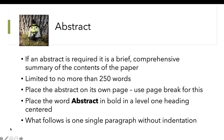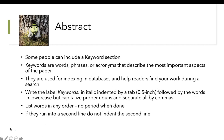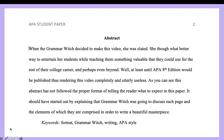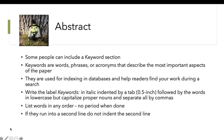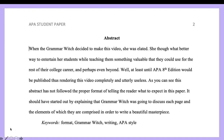For your abstract, it's a brief comprehensive summary of the contents of the paper. Make sure it's no more than 250 words and it has its own page right after the title page. The word 'Abstract' is in bold and centered, and there's one paragraph with no indentation. Some people put a keywords section at the bottom — these are words, phrases, or acronyms describing the most important aspects of the paper, helping readers find your work in databases. Use the word 'Keywords:' in italics, indent 0.5 of an inch, follow it with the words in lowercase, capitalize proper nouns, separate all by commas, list in any order — no need to alphabetize. Never put a period at the end, and if they run into a second line, do not indent that second line.